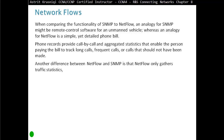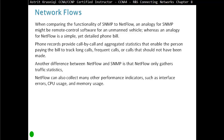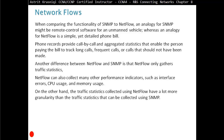Another difference between NetFlow and SNMP is that NetFlow only gathers traffic statistics, whereas SNMP can also collect many other performance indicators such as interface errors, CPU usage, and memory usage. On the other hand, the traffic statistics collected using NetFlow are a lot more granular than the traffic statistics that can be collected using SNMP.